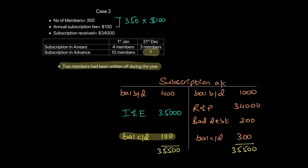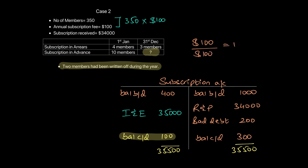Income and expenditure can be directly calculated: 350 members times $100 = $35,000. The missing figure was the closing subscription in advance. Adding up the credit side and subtracting from the debit side gives a balance carried down — closing subscription in advance — of $100. That means only one member had paid in advance (100 divided by 100 = 1 member). That becomes your closing subscription in advance.